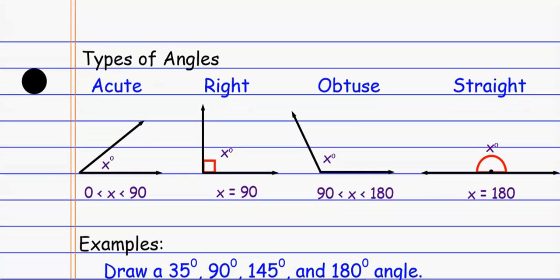Some of the angle types that we run into when we're talking about angles, we have acute angles which refers to an angle, a smaller type of angle. It's one that's between zero and 90 degrees.